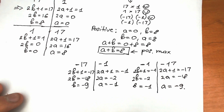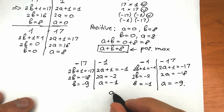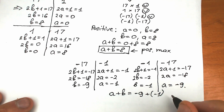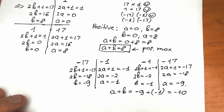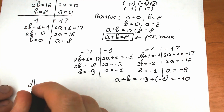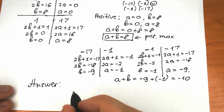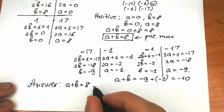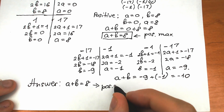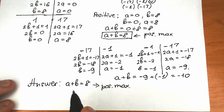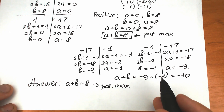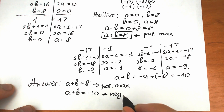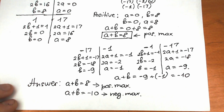We've now found all solutions — positive and negative. For the negative cases, a plus b equals (−9) + (−1), which equals −10. So our general answer is: a plus b equals 8 (positive maximum) or a plus b equals −10 (negative minimum).